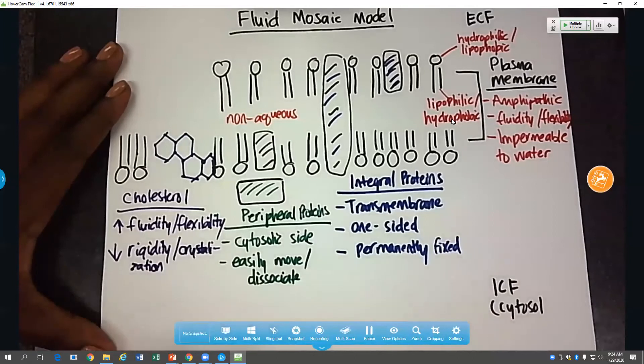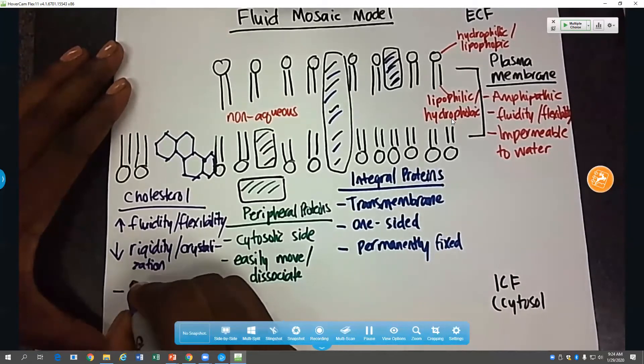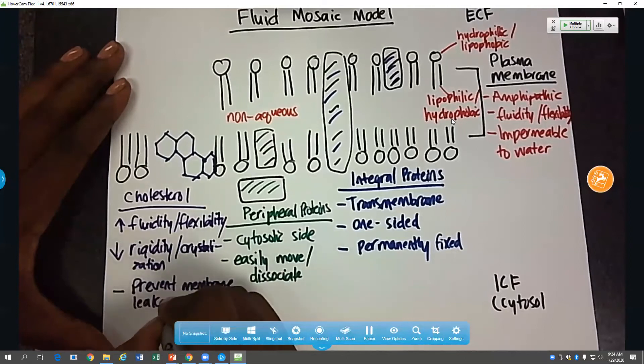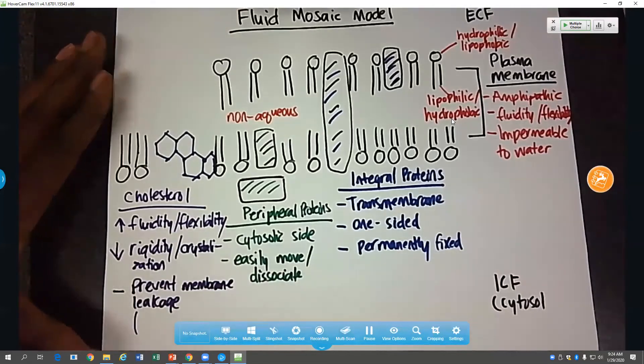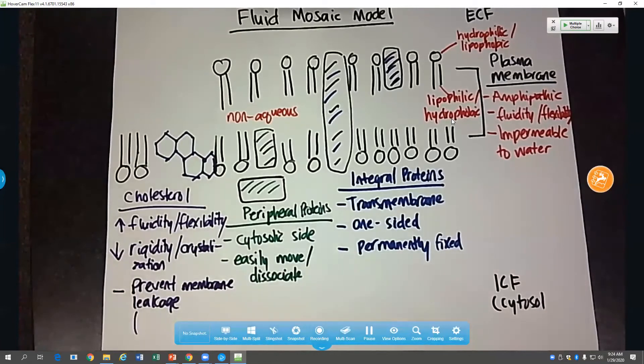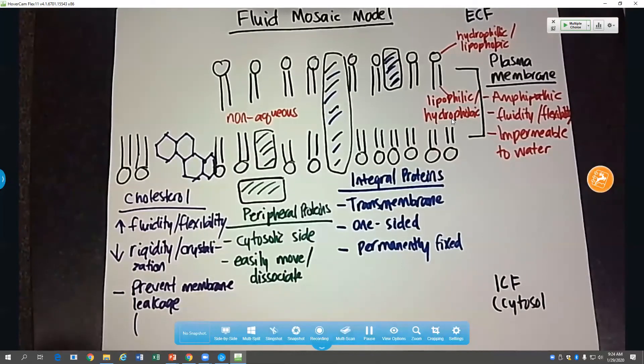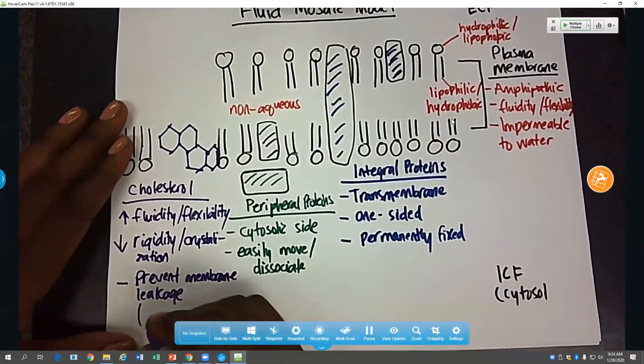They also prevent the membrane from being leaky, so they prevent membrane leakage. And that's because they're fats. So we've looked at cholesterol as an example of one of our biomolecules of fats. And they are not going to interact very well with water. And so if we have lots of big chunks of cholesterol in the membrane, that's going to help preventing water from moving from side to side. So they also help to prevent membrane leakage because they are impermeable in the cell to water.